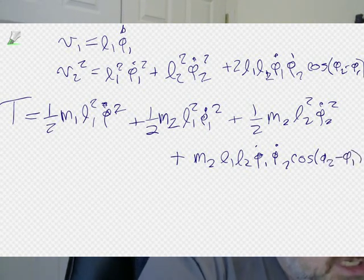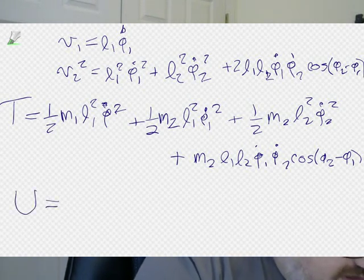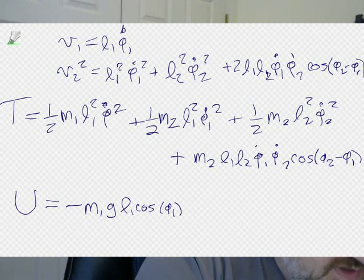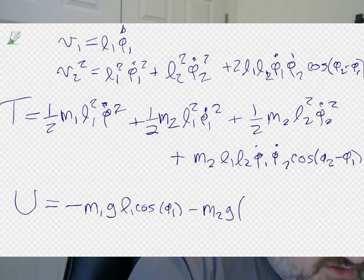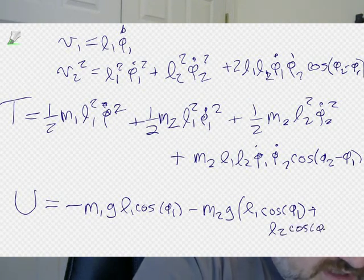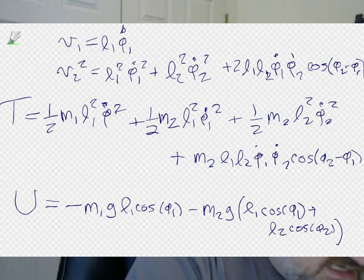For the potential energy, taken relative to the pivot point, the first bob contributes minus M1*g*L1*cosine(phi1). For the second bob, its depth below the pivot is L1*cosine(phi1) plus L2*cosine(phi2), so it contributes minus M2*g*(L1*cosine(phi1) + L2*cosine(phi2)). The Lagrangian is T minus U as usual.